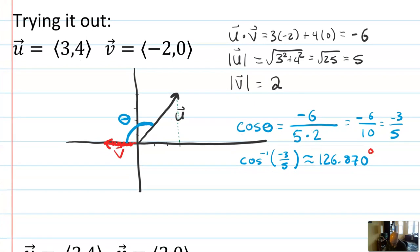You find the three things you need. One, two, three. You plug them into the formula. You do an inverse trig. You get your angle.